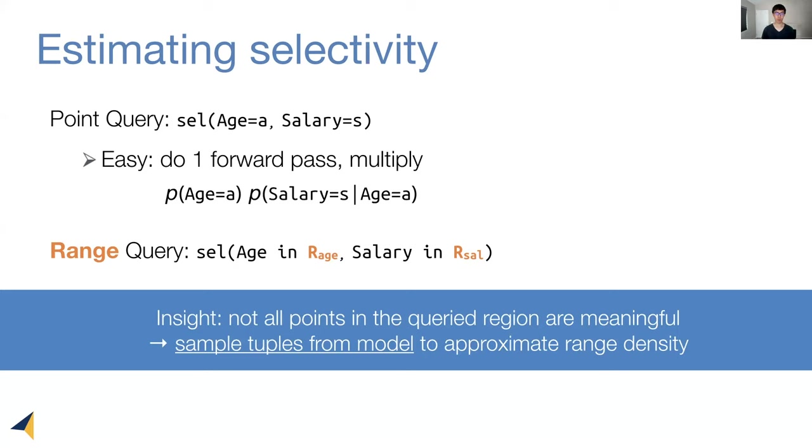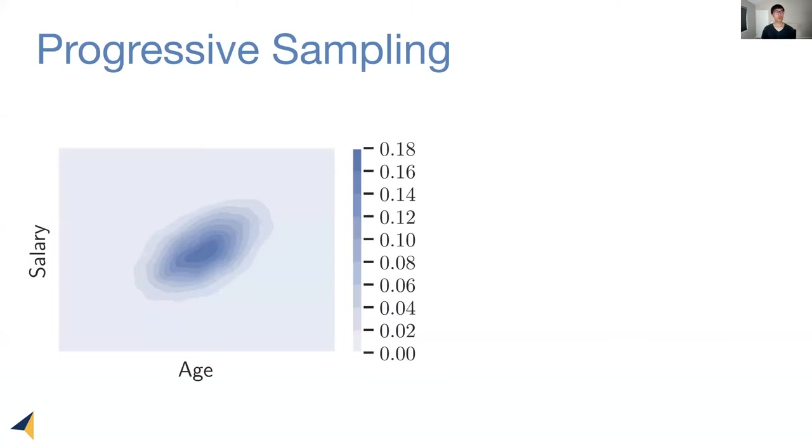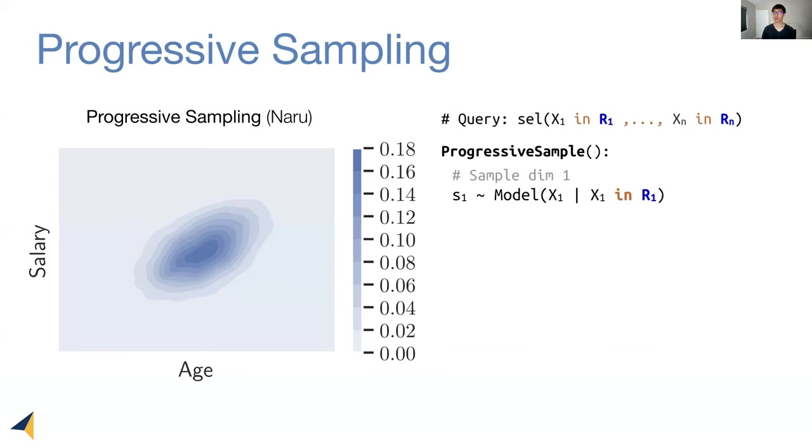To that end, we propose an inference algorithm called progressive sampling. Here, we illustrate it on a 2D density plot over salary and age. Darker color means more tuples living in that region. Progressive sampling works as follows. Given a query, we first start sampling the first dimension from the first model output, and we make sure the sample comes from the query region R1. We go on to the second dimension, and we sample from the second model output. Again, we make sure the sample comes from R2, and condition on the first dimension sample.